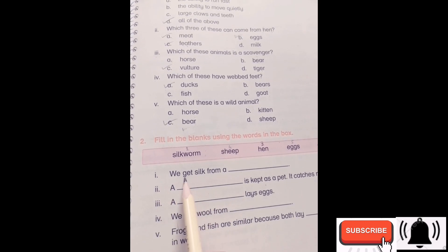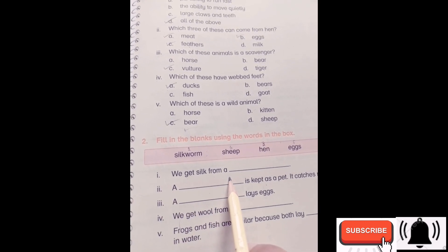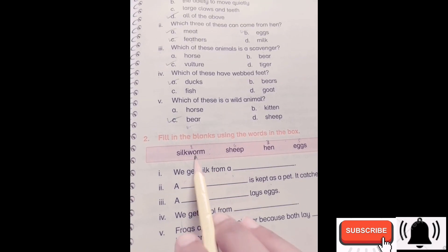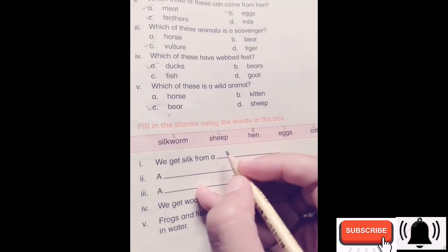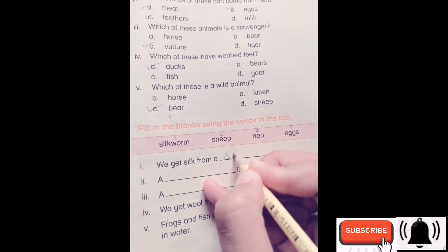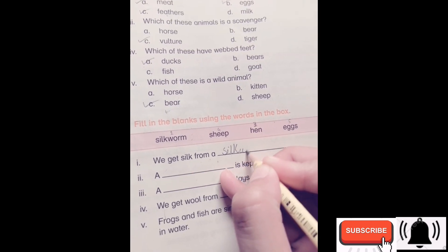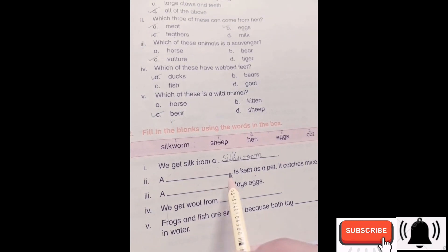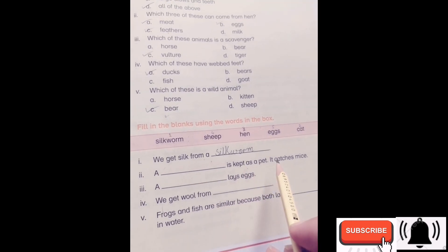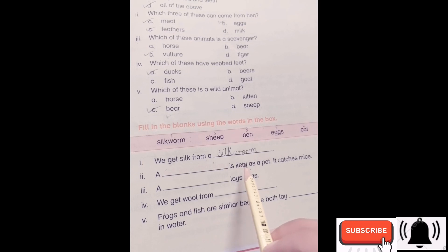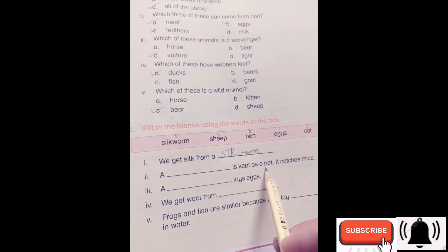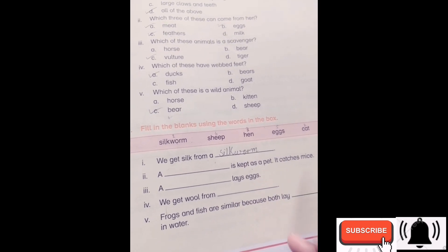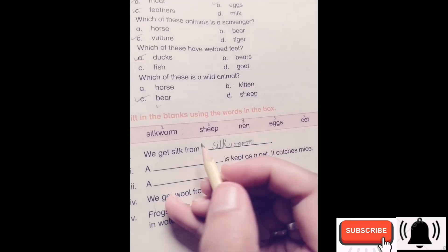Number one, we get silk from a... what do we get silk from? The correct answer is silkworm. Number two, a dash is kept as a pet, it catches mice. What do we keep as a pet in the house and it catches mice? The correct answer is cat.